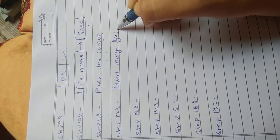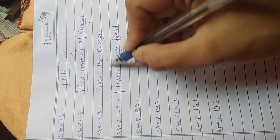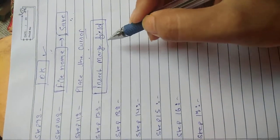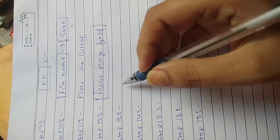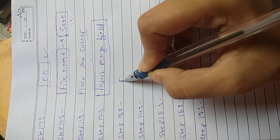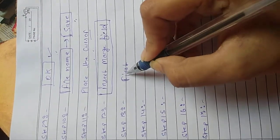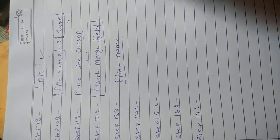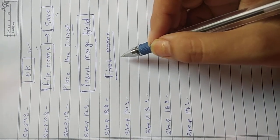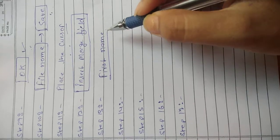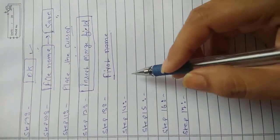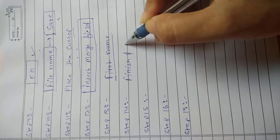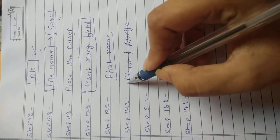If we want to create a mail merge, we have to follow some steps. Step 1: Click on the Mailings tab. Step 2: After clicking on it, click on Start Mail Merge from the Start Mail Merge group. When you click on the Start Mail Merge option, a list will appear on screen.